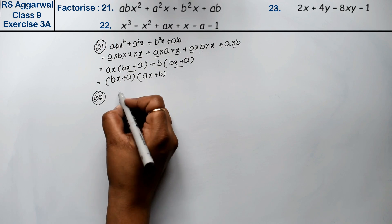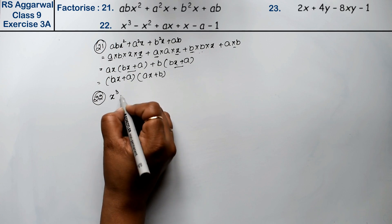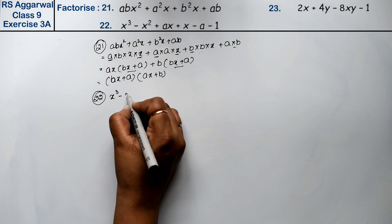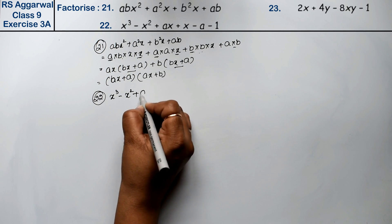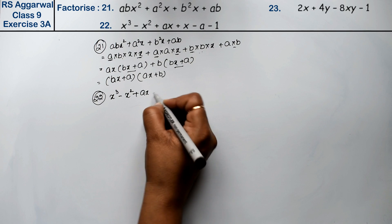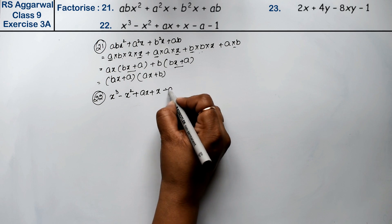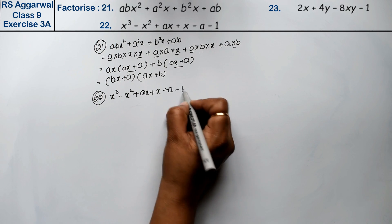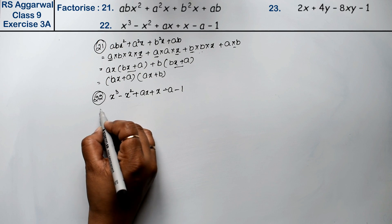Question number 22 is x³ minus x² plus ax plus x minus a minus 1.